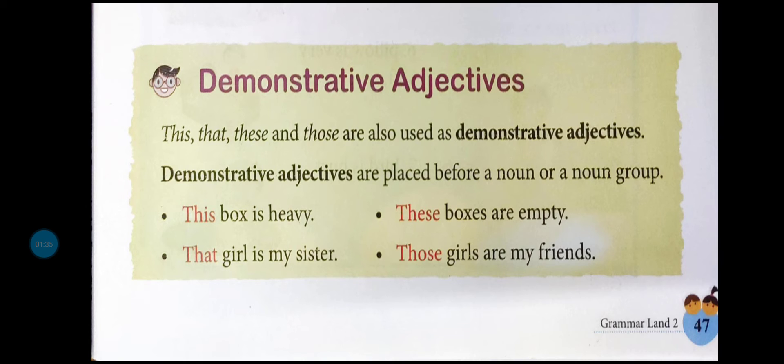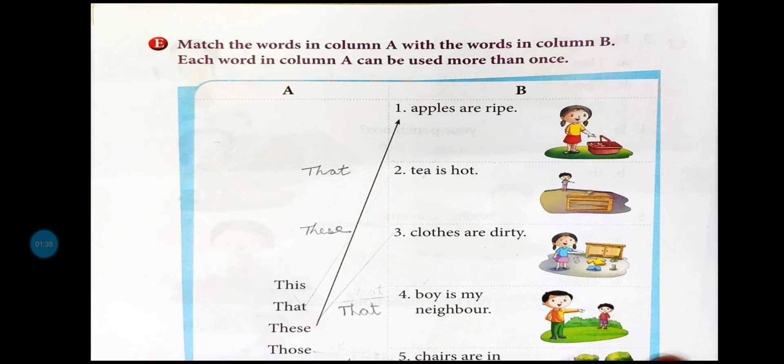Next, دیکھو اس کے related exercise ہے۔ یہاں پر آپ لوگوں کو کچھ words دیئے ہوئے ہیں۔ یہاں پر matching کرنا ہے آپ کو کہ اس کے ساتھ کون سا word جائے گا۔ Like apples - جو ہے اس کو ہم plural form دیکھیں گے، plural form ہے پر یہاں نزدیک میں ہے، برابر تو ہم یہاں پر these کے ساتھ matching کریں گے۔ میں نے یہاں پر آپ کو لکھ کے دیا ہے، matching نہیں کیا ہے۔ Tea is hot - tea دور رکھی ہوئی ہے، singular form ہے تو that کا use کریں گے - that tea is hot۔